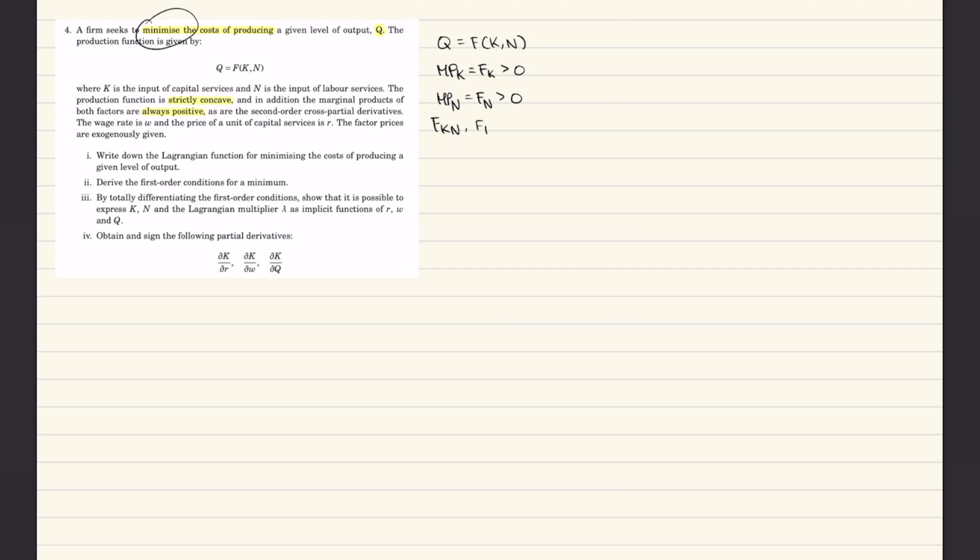It's given the wage rate as w and the price of unit of capital services is r. Factor prices are supposedly given, which basically means they're a constraint because they're factors that don't directly affect it. Think of it as your iso cost and production function - this is your production, this is your iso cost, so that's why it's exogenous. We have the production function and we're also given indirectly the demand for capital and labor, which is just your cost function: rk plus wn equals total cost.